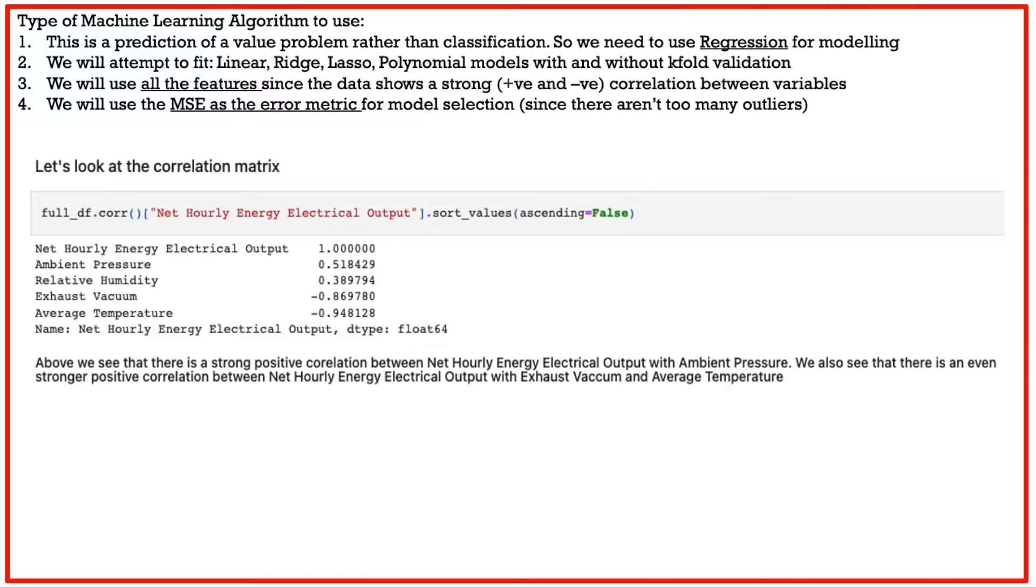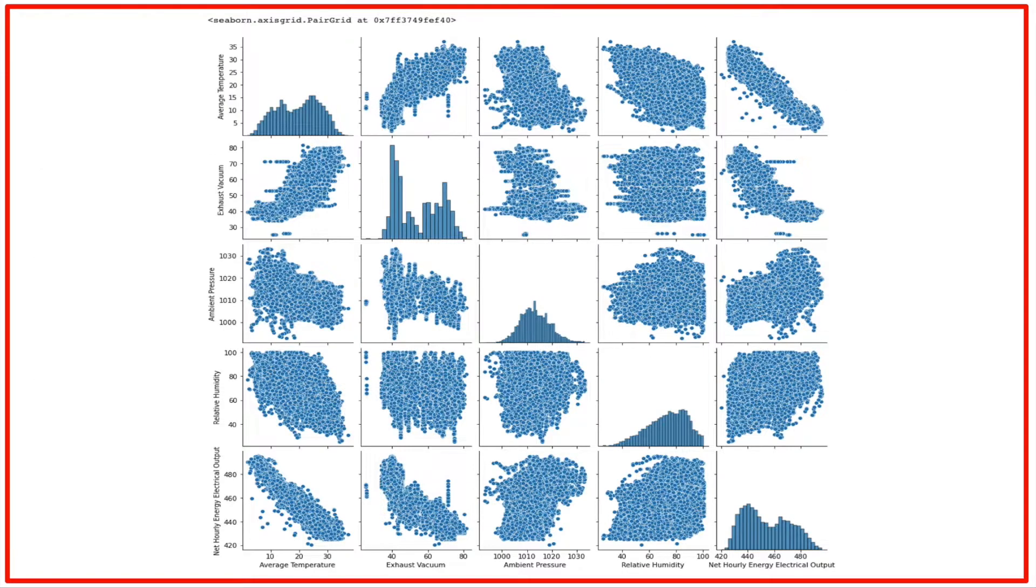The metric that we are going to use is mean square error metric. As you will see in the next slides, there aren't too many outliers in the data for each of these values. So let's move on to the next slide. Here is a pair grid of all the variables with each other and like I said we do not see too many outliers.